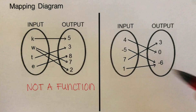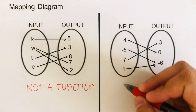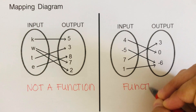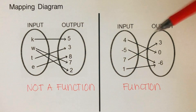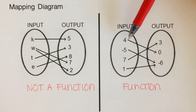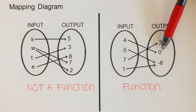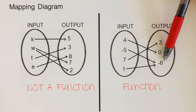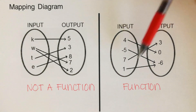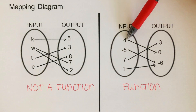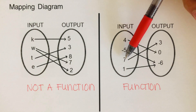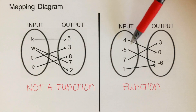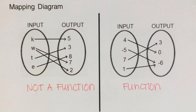The second problem is a function because each input has one unique output. The four has a unique output of zero, negative five has negative six, seven has three, and one has negative six. Each of these inputs is producing one unique output, so it is a function.